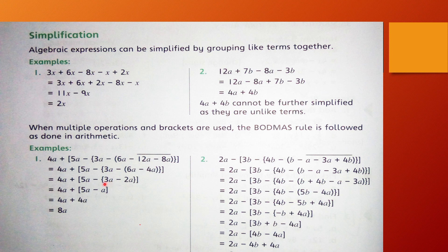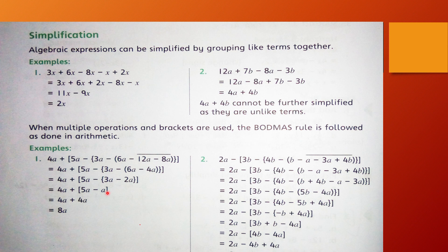Ab curly bracket khatam karni hai. Curly bracket ke andar 3A positive aur minus 2A hai. 3A minus 2A = A. Single term A aayegi. Curly bracket khatam. Bahar sign minus ka hai aur big bracket bachi hai.